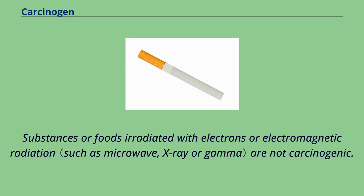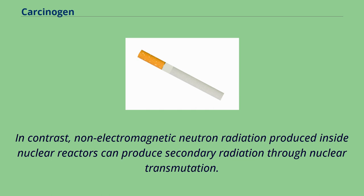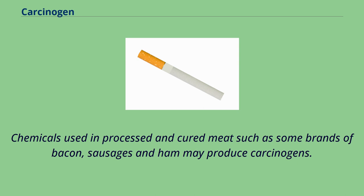Substances or foods irradiated with electrons or electromagnetic radiation are not carcinogenic. In contrast, non-electromagnetic neutron radiation produced inside nuclear reactors can produce secondary radiation through nuclear transmutation. Chemicals used in processed and cured meat such as some brands of bacon, sausages, and ham may produce carcinogens.